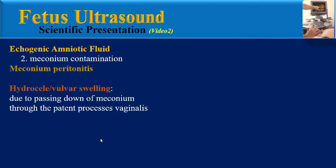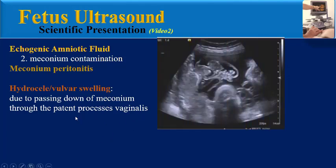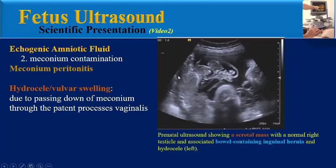Another finding is hydrosal or scrotal swelling due to passing down of meconium through the patent processus vaginalis. This image shows prenatal ultrasound with a scrotal mass alongside a normal right testicle, an associated bowel-containing inguinal hernia, and also a hydrocele.